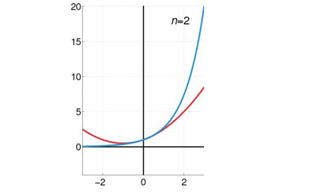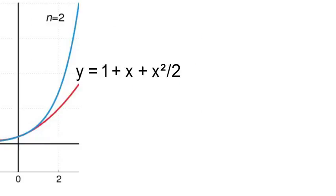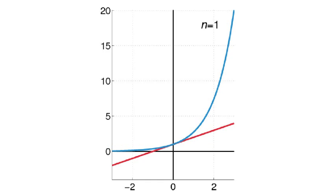But actually you can add more terms to get an even better approximation to the e to the x curve. This red function would be one plus x plus x squared over two. And you see how it matches the curve better.